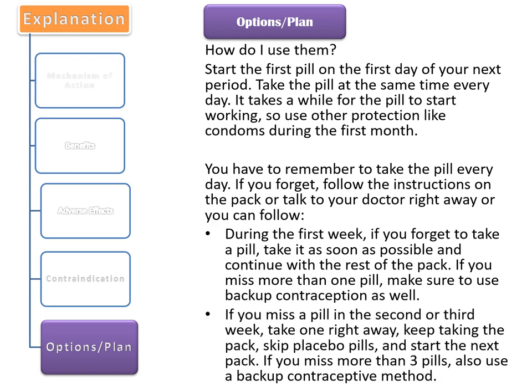If you miss a pill in the second or third week, take one right away, keep taking the pack, skip the placebo pills, and start the next pack. If you miss more than three pills, also use a backup contraceptive method.